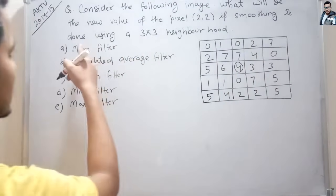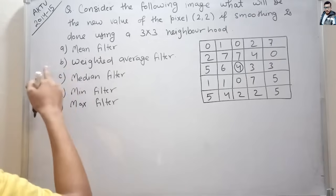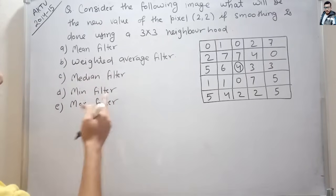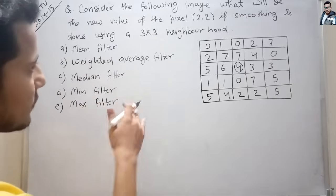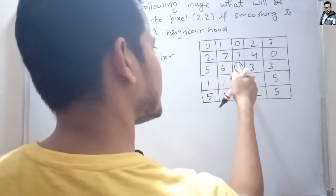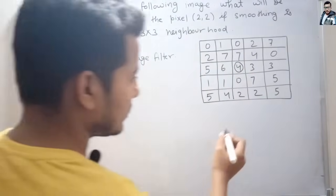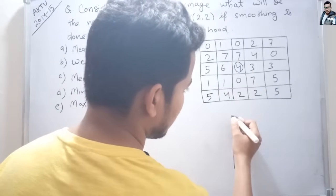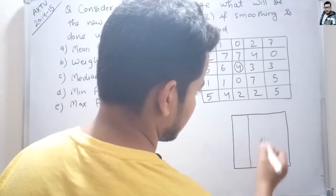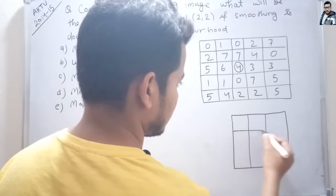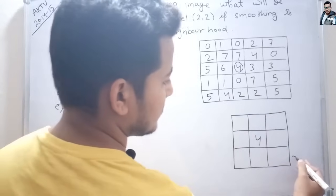If smoothing is done using a 3x3 neighborhood. The filters to apply are: first, mean filter; second, weighted average filter; third, median filter; fourth, min filter; and fifth, max filter. By applying each filter, we have to find the new value of pixel 2,2, which currently has value 4, using the 3x3 neighborhood. The 3x3 neighborhood for this pixel is as follows.